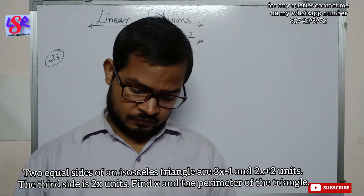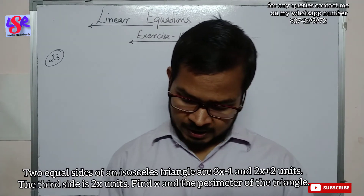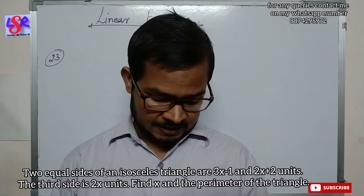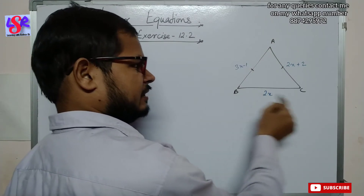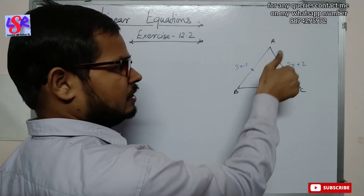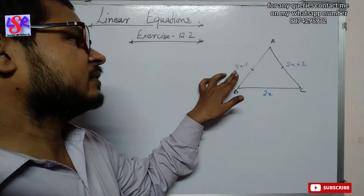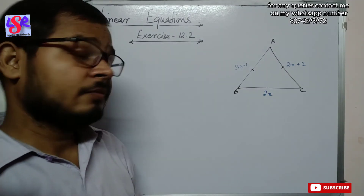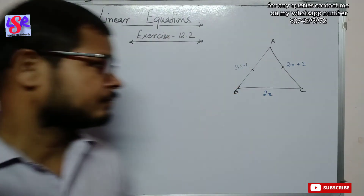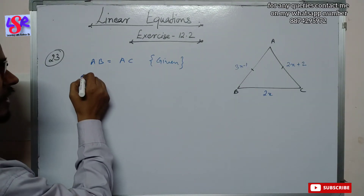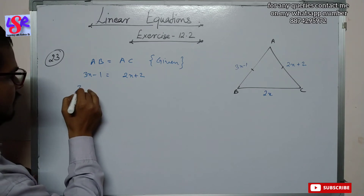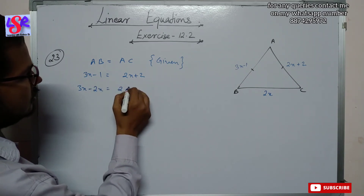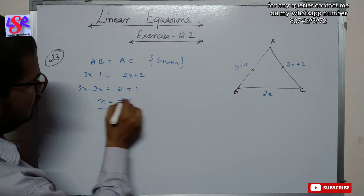Now we move to question number 23. Two equal sides of an isosceles triangle are (3x − 1) and (2x + 2) units, and the third side is 2x units. Since the two sides are equal: 3x − 1 = 2x + 2, so 3x − 2x = 2 + 1, giving x = 3.